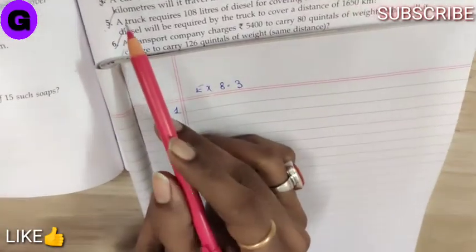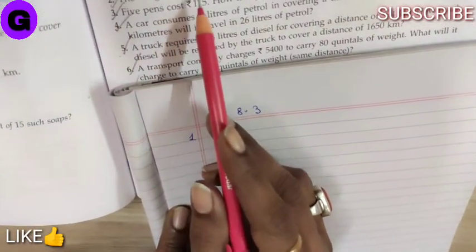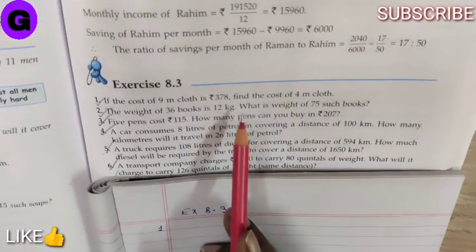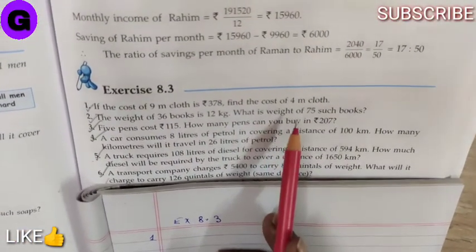sum number 1, if the cost of 9 meter cloth is rupees 378, find the cost of 4 meter cloth.